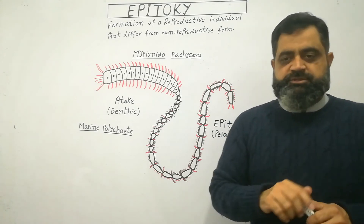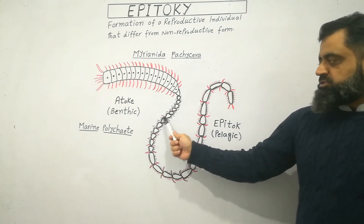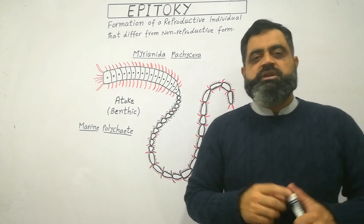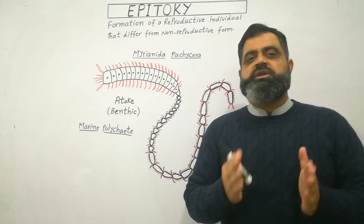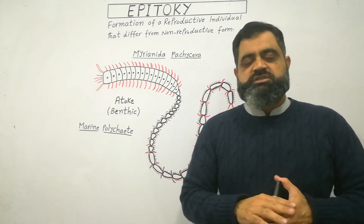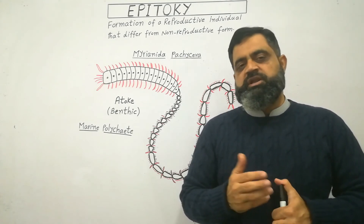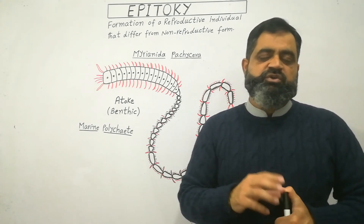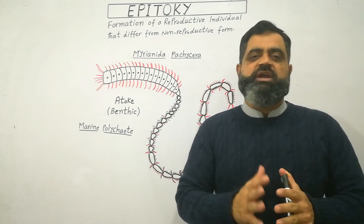These segments are usually filled with gametes — both male and female gametes. After swimming in the water, the male and female come across each other and perform sexual reproduction.